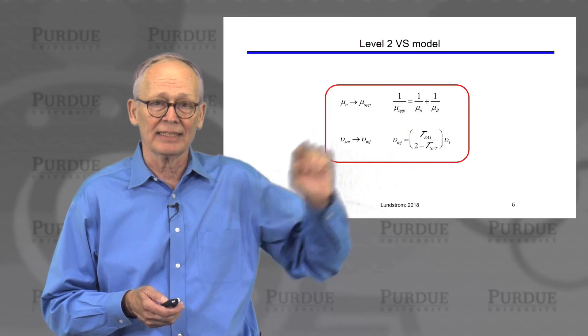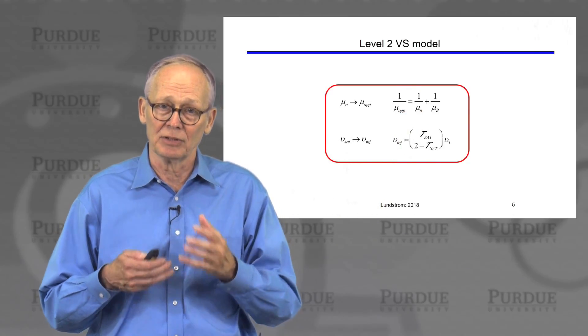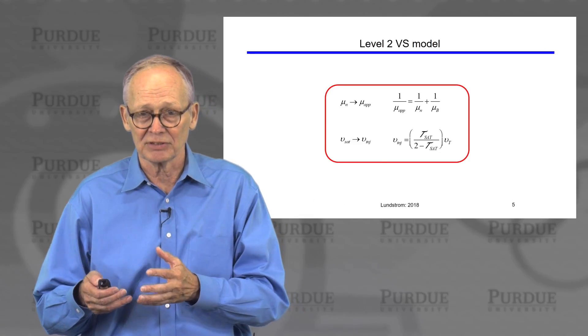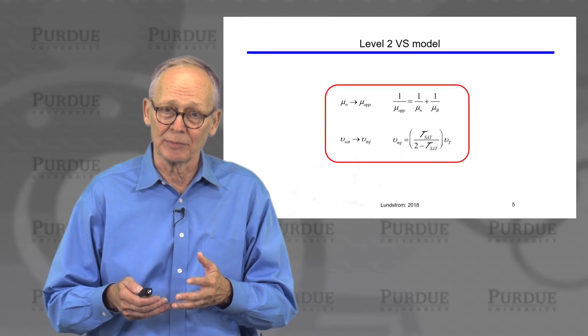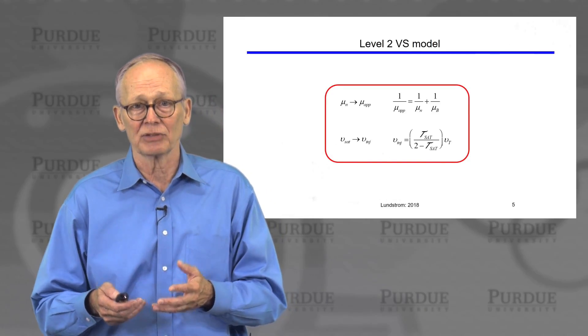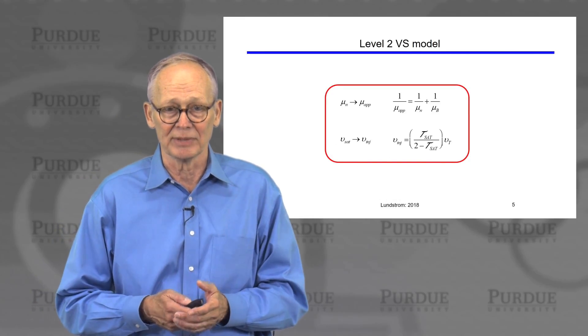The apparent mobility is a combination of the diffusive mobility and the ballistic mobility. In very short transistors, the ballistic mobility dominates. In longer channel length transistors, the diffusive mobility dominates.